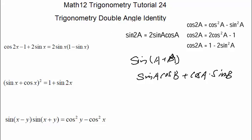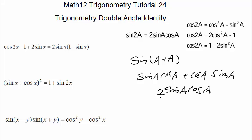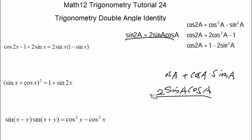If we replace all the b's with a, we get sine a cosine a plus cosine a sine a. These are the same, so it equals 2 sine a cosine a. That is our double angle formula for sine. Easy enough!